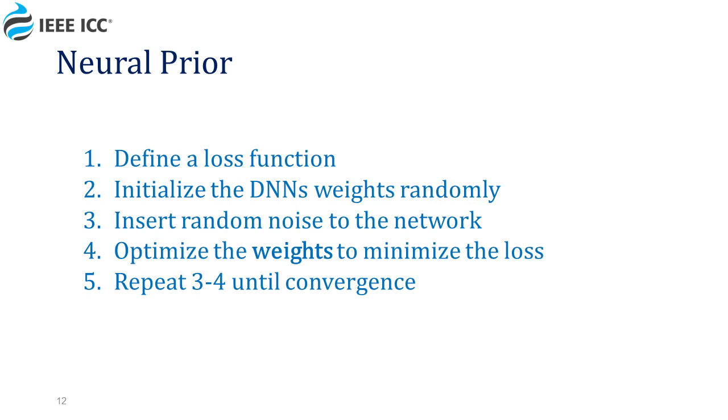Then we will feed the network with random Gaussian noise and check the configuration at the network output. We will optimize the weights of the network so that, with the help of the chain rule, the next output will be optimized on the loss function. Now we will repeat steps 3 and 4 until the network converges and one configuration is selected.